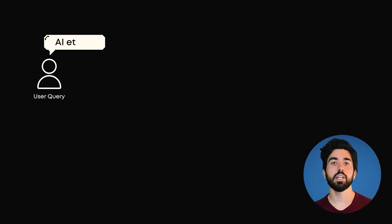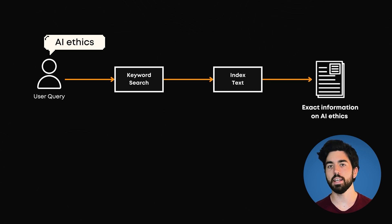For example, if you're looking for company policies about AI ethics, keyword search will find documents with those exact words.